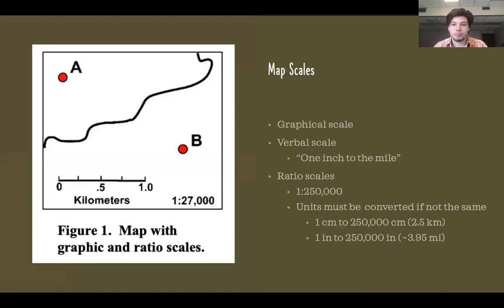There are three main types of map scales: graphical scales, verbal scales, and ratio scales. A graphical scale is like this bar on this map that denotes distance and how that compares to distance in the real world. A verbal scale is written in words, something like one inch to the mile.